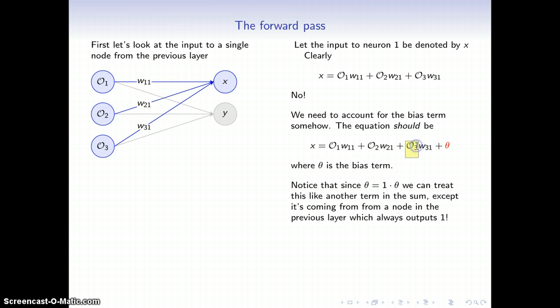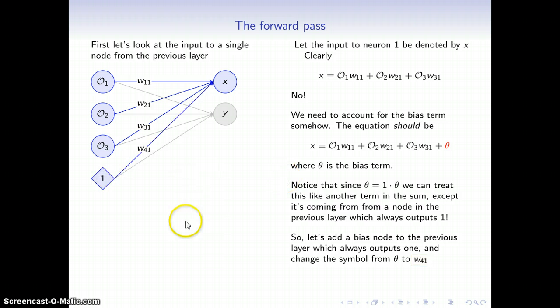So what I'm going to do is where I would normally have an output, I will artificially create another special kind of node called a bias node, whose job it is to sit there and output 1 all the time. And then this number theta will then just become the weight that connects this output that is always 1 to this neuron x, right, this first guy. So let's go ahead and add the bias node to the previous layer and change the symbol that links it from theta to the weight that now connects the fourth node to the first node.